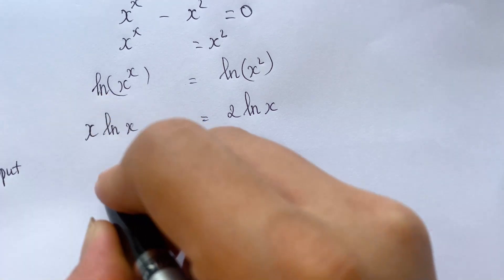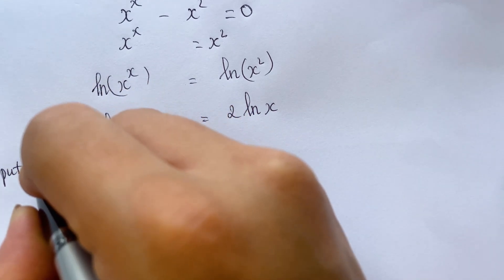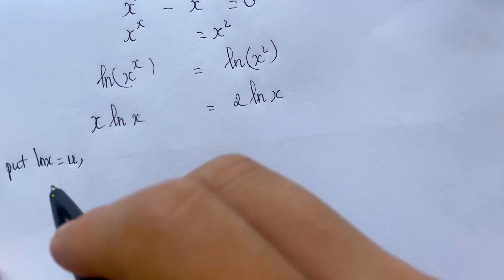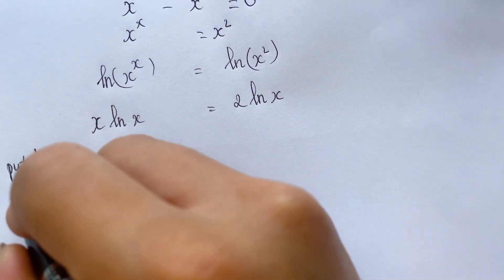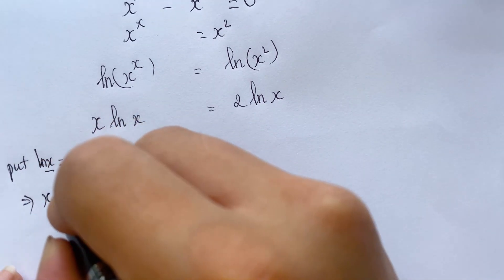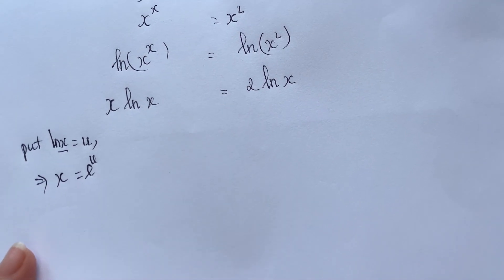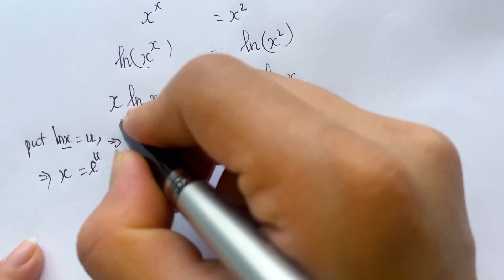you need to put natural logarithm of x equals u. And then we can have x equals e power u. And then we can rewrite here,